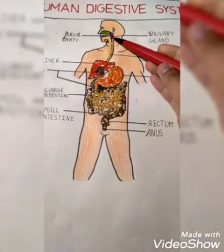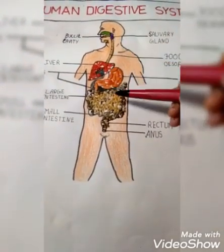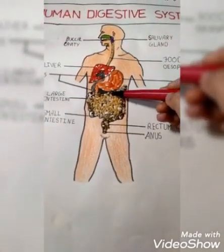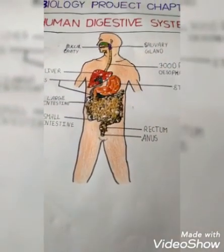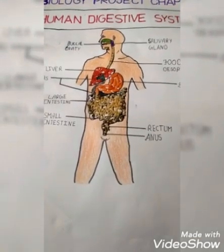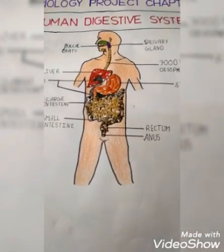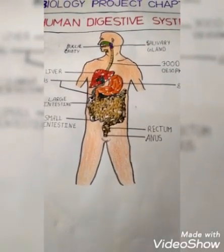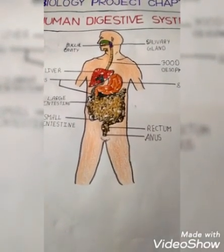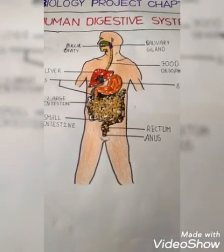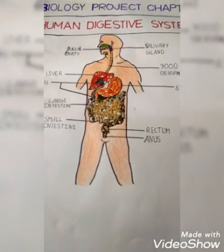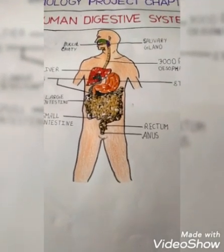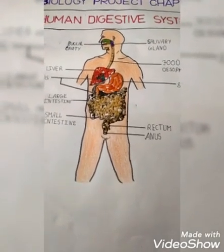Salivary glands, pancreas, and liver are the main associated glands. The alimentary canal together with these associated glands forms the overall digestive system.